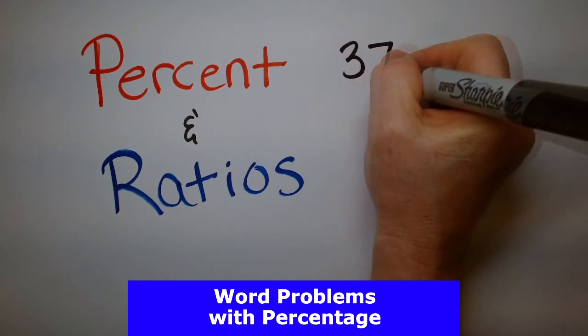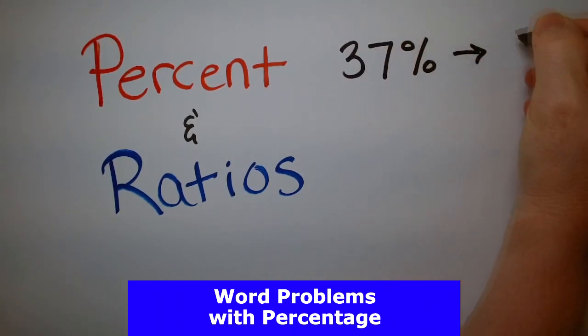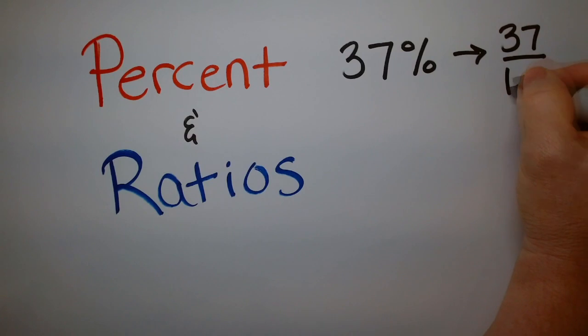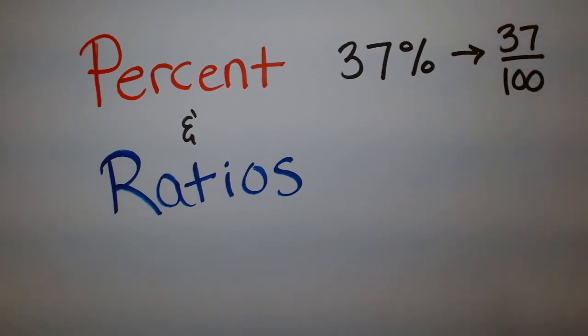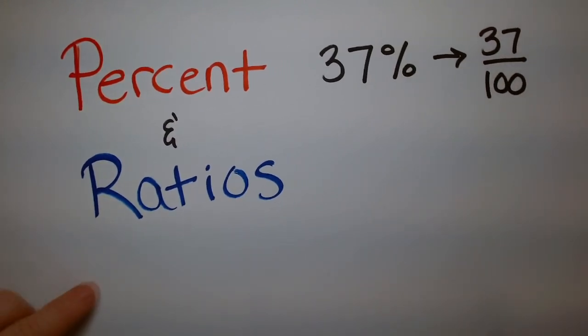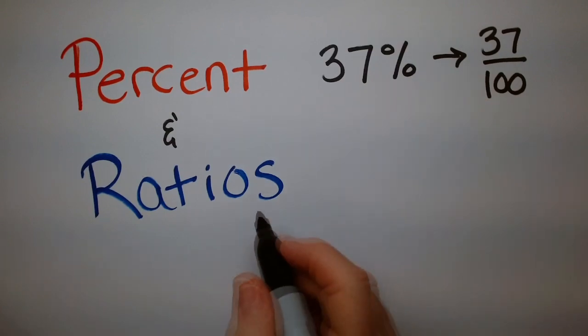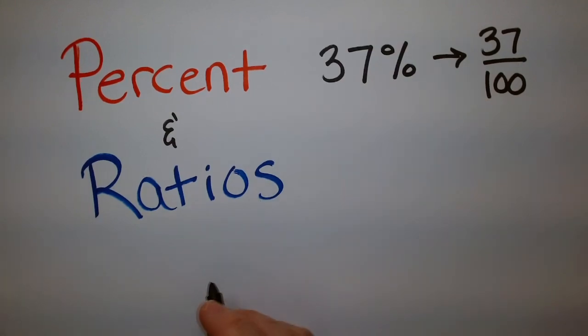Percent is just a number that is a fraction where the denominator is 100. A ratio is different than a fraction. It tells you how one thing relates to another.